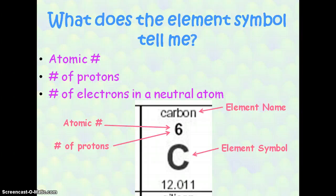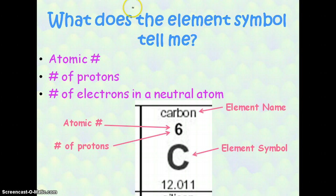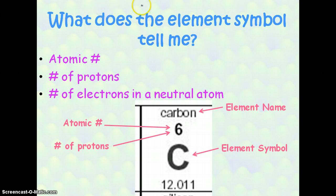What does the element symbol tell me? If I'm given the symbol C for carbon, it tells me quite a few things. Number one, it tells me the atomic number, which is the top number on the periodic table. It also tells me the number of protons, because the number of protons is equal to the atomic number. And if my atom has no charge, I know that that is also the number of electrons. So just knowing the element tells me a whole lot of things about my atom.